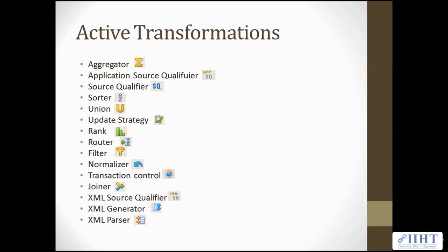The Normalizer transformation, source qualifier for COBOL sources, can also be used in the pipeline to normalize data from relational or flat file sources. The Transaction Control transformation defines commit and rollback transformations. The Joiner transformation joins data from different databases or flat file systems. The XML Source Qualifier represents the rows that the integration service reads from an XML source when it runs a session. The XML Generator reads data from one or more input ports and outputs XML through a single output port. The XML Parser reads XML from one input port and outputs data to one or more output ports.